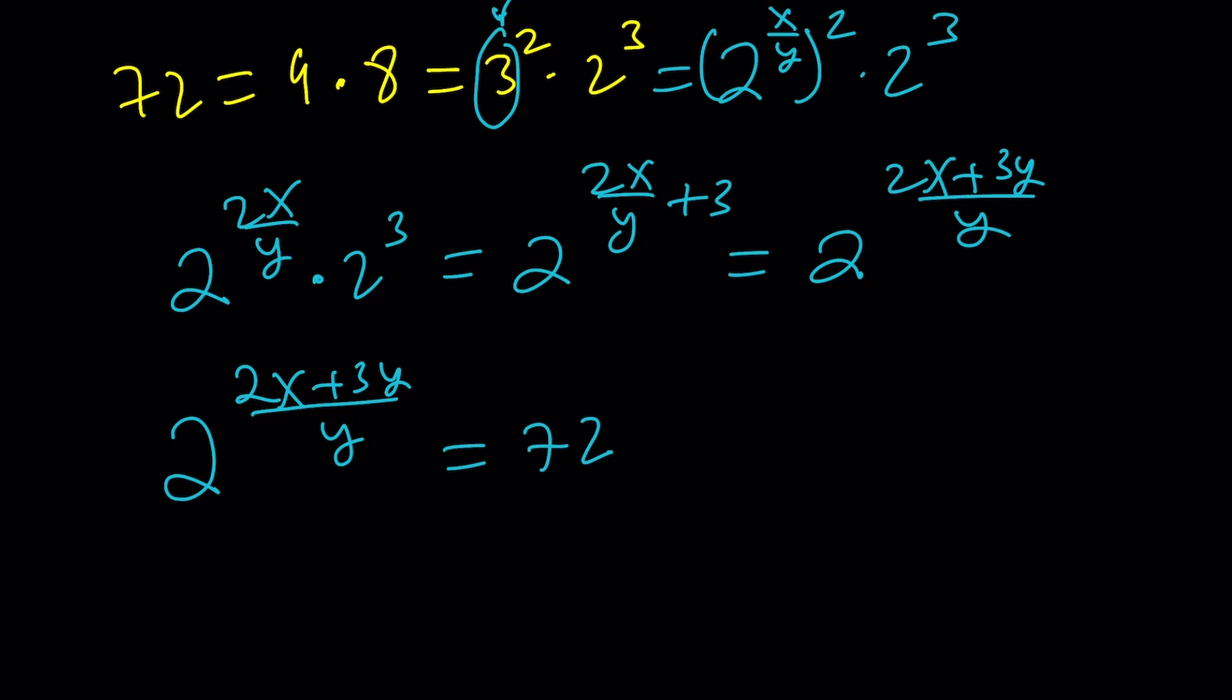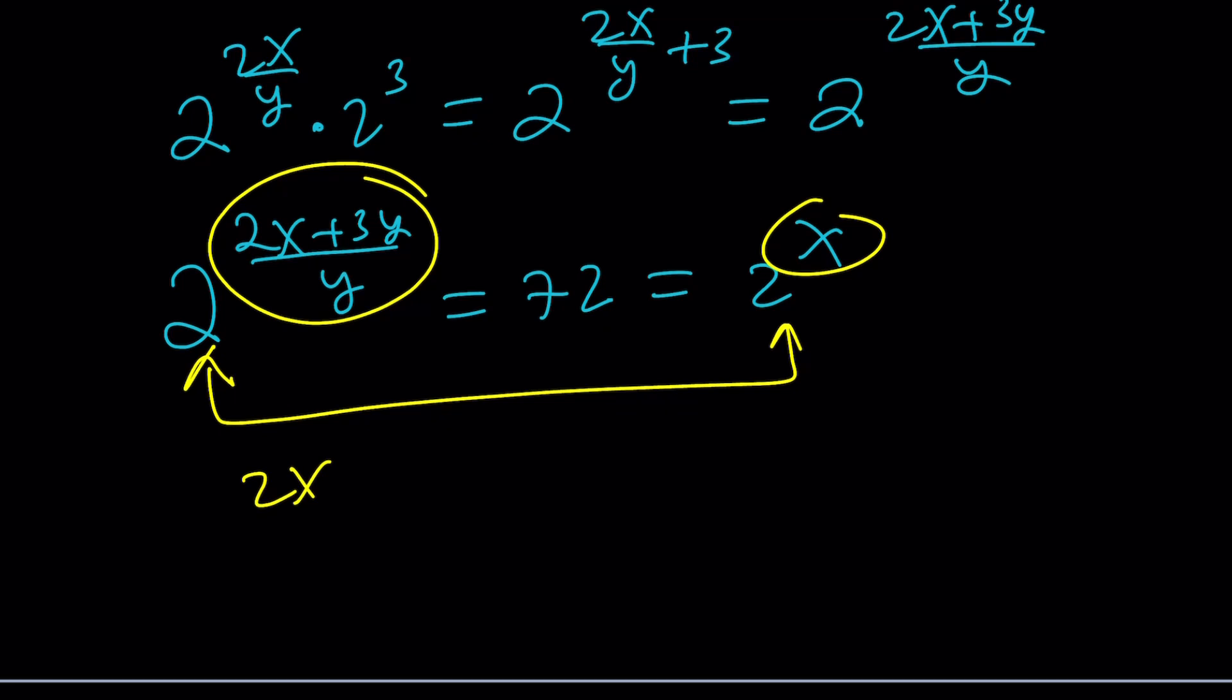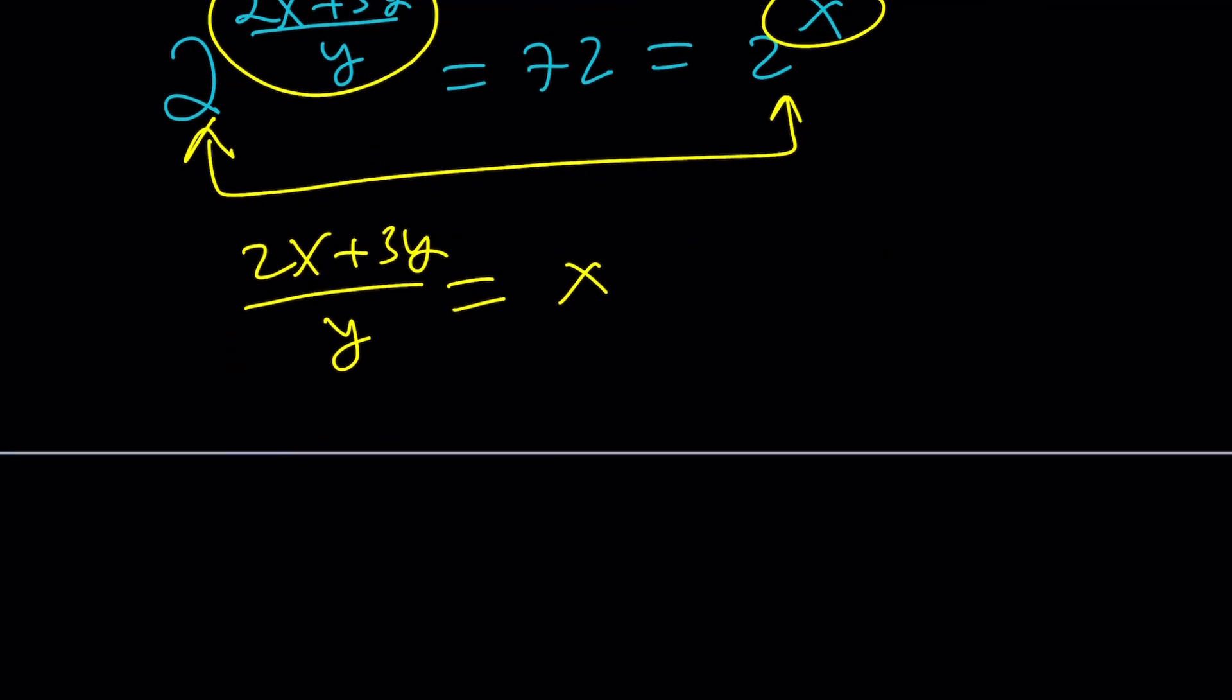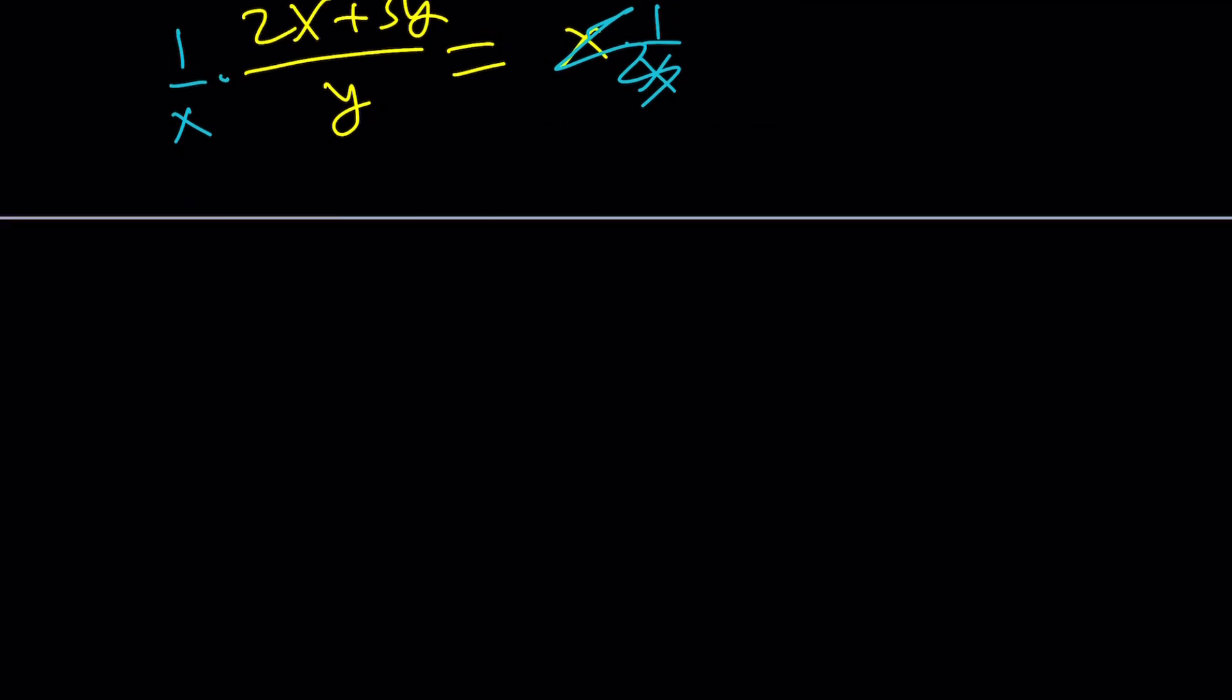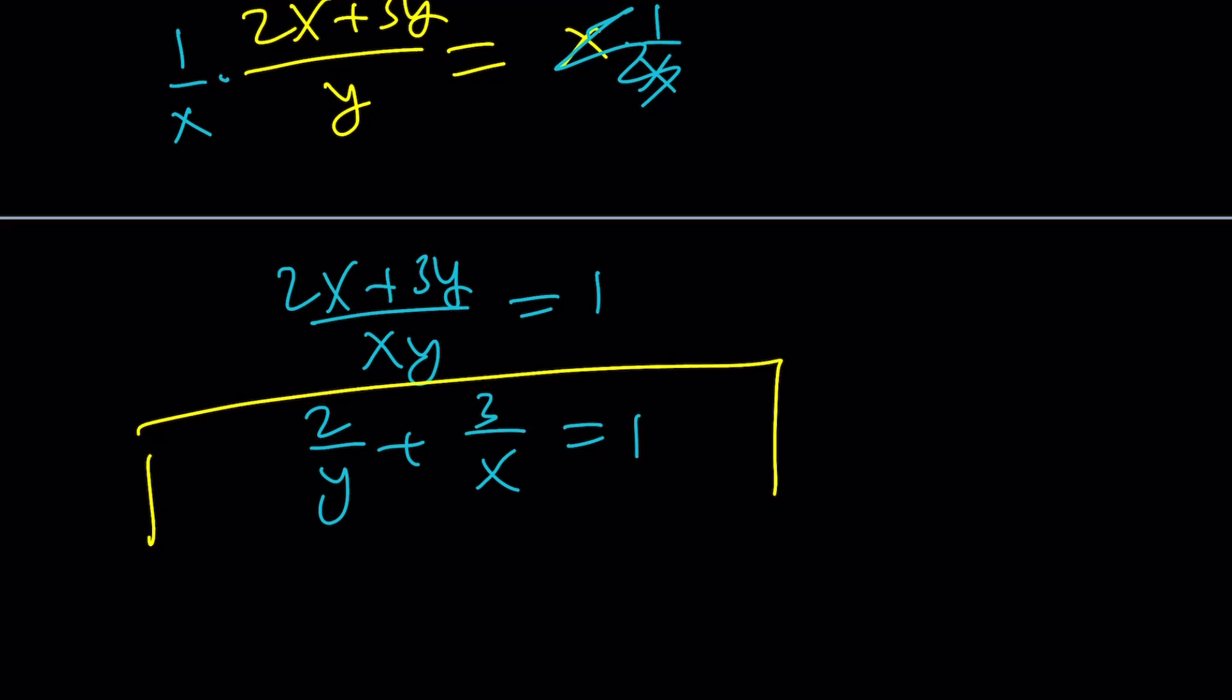That's great. So, we can go ahead and set these equal to each other directly. The exponents are equal. 2x plus 3y over y equals x. Cross multiply or multiply both sides by 1 over x. It's even better. By 1 over x, you get 1 here. And on the left-hand side, you get 2x plus 3y over xy equals 1 as before. And that is 2 over y plus 3 over x equals 1 as before. And this brings us to the end of this video.